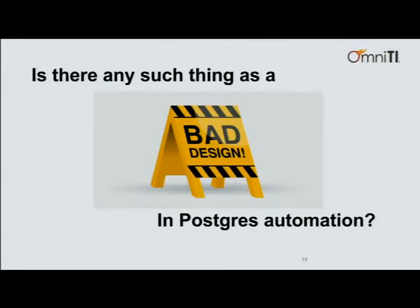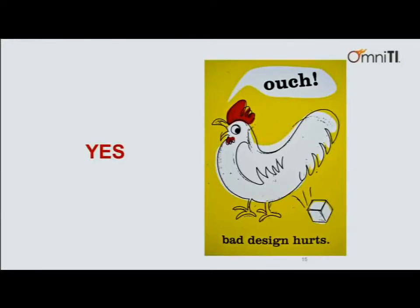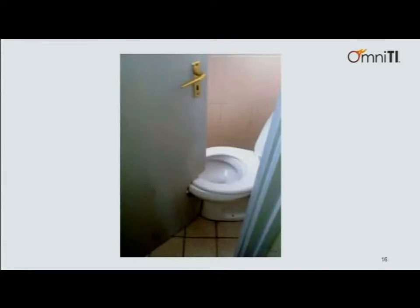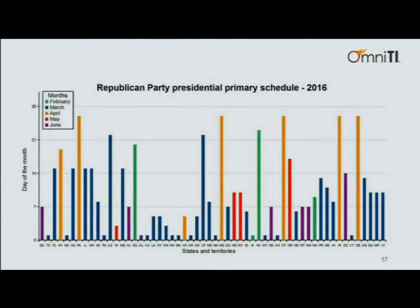Is there such a thing as a bad design when it comes to Postgres automation? Yes, and it tends to hurt. First and foremost, stay away from ugly hacks. When you start building tasks and something doesn't work, you'll be tempted to put in hacks just to make them work — stay away from that because they'll only get worse over time. Choose the most straightforward tool for the job. The bar graph example on the slide shows presidential primary dates — no reason it couldn't be a calendar. The same applies to your automation design.